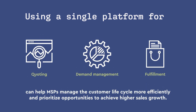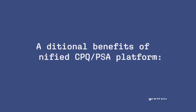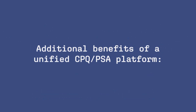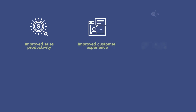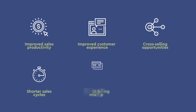Using a single platform for quoting, demand management, and fulfillment can help MSPs manage the customer lifecycle more efficiently and prioritize opportunities to achieve higher sales growth. Additional benefits of a unified CPQ and PSA platform include improved sales productivity, improved customer experience, more cross-selling opportunities, shorter sales cycles, fewer billing mishaps, and more effective sales-to-service handoffs.